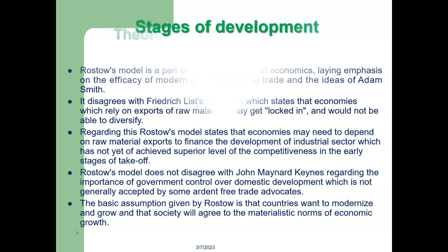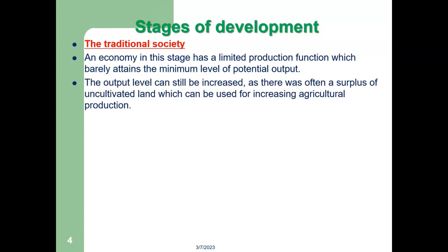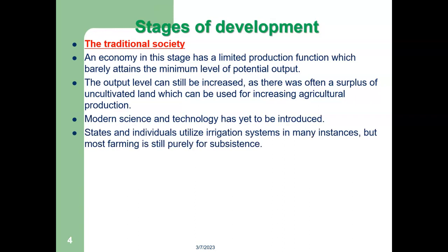We start with the traditional society — this is the first stage of economic growth. An economy in this stage has a limited production function which attains the minimum level of potential output, and higher households and other individuals produce for their own consumption. The output level can still be increased as there was often a surplus of uncultivated land which can be used for increasing agricultural production. Modern science and technology has yet to be introduced in the traditional society; states and individuals utilize irrigation systems in many instances, but most farming is still purely for subsistence.